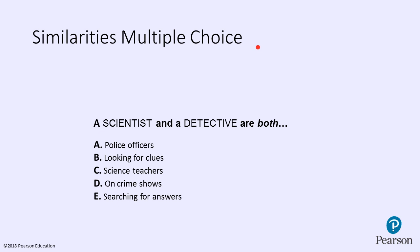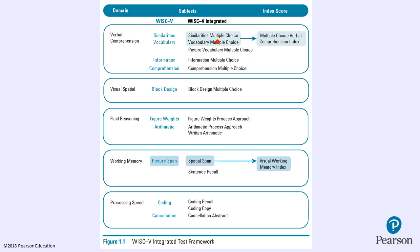Here's an example of what a Similarities Multiple Choice item looks like — this is not a real item. It's presented in a stem book; the item is read aloud and the child selects the response. There are two-point, one-point, and zero-point responses that match the sample responses and scoring from the regular WISC-V subtest.